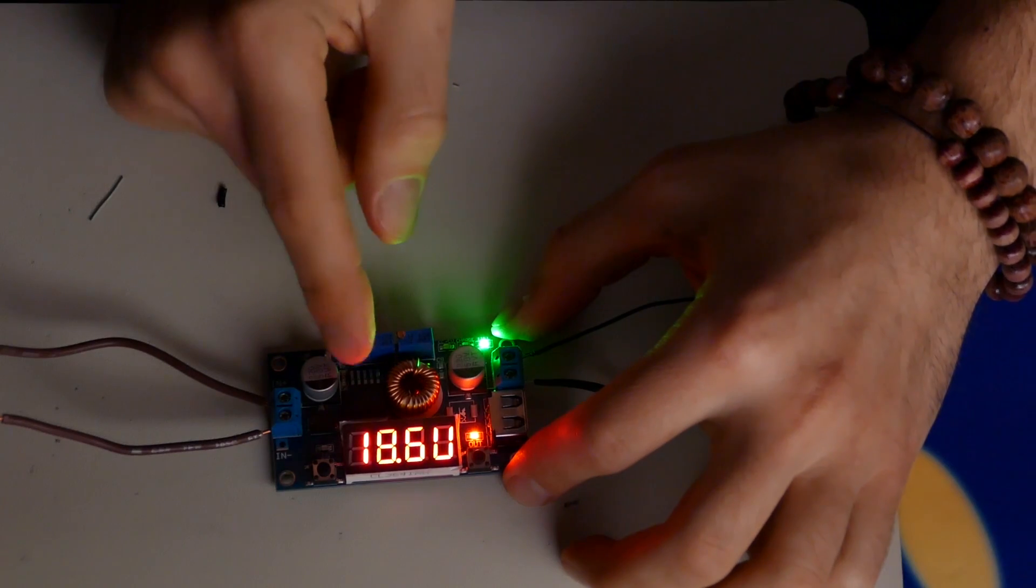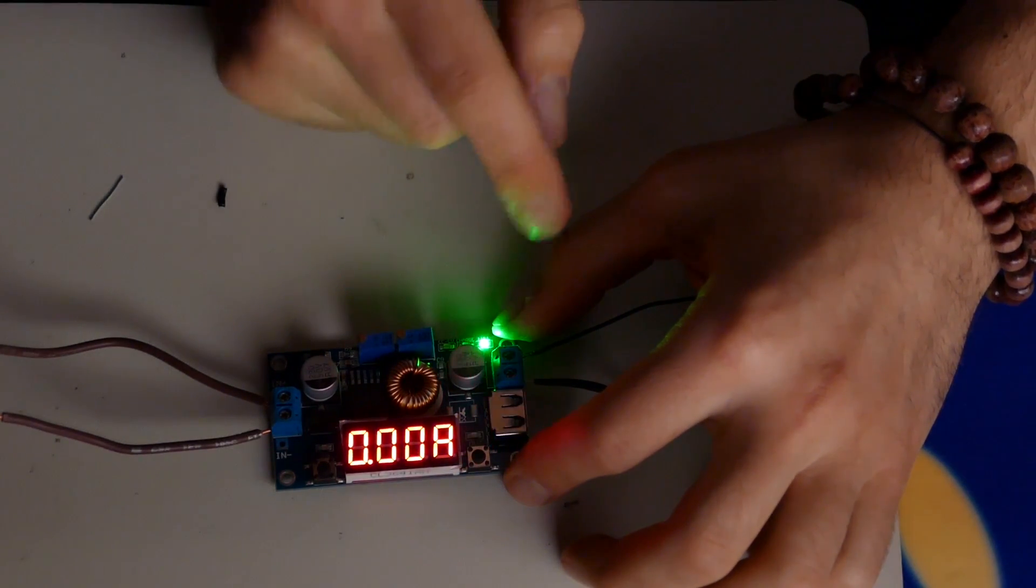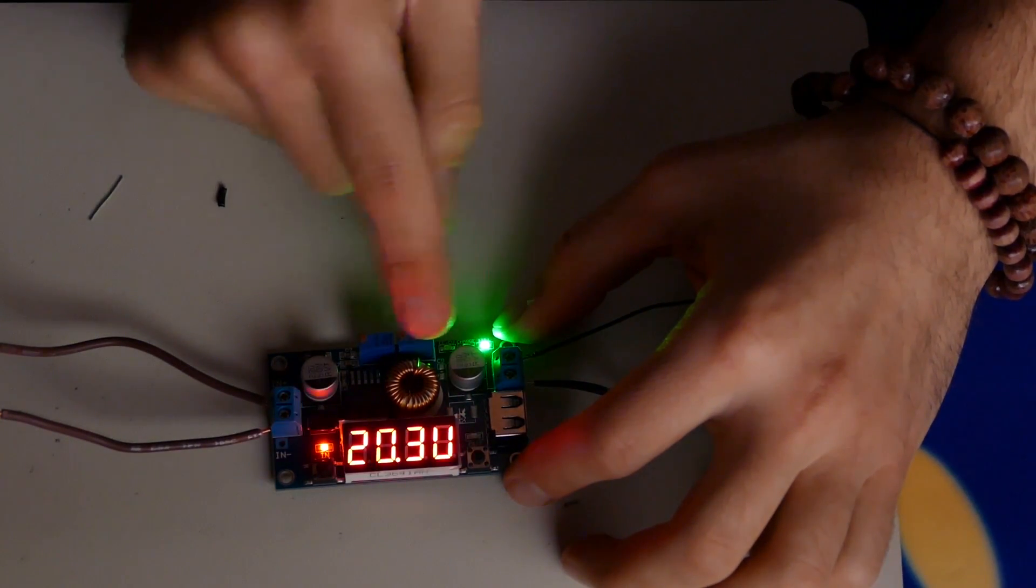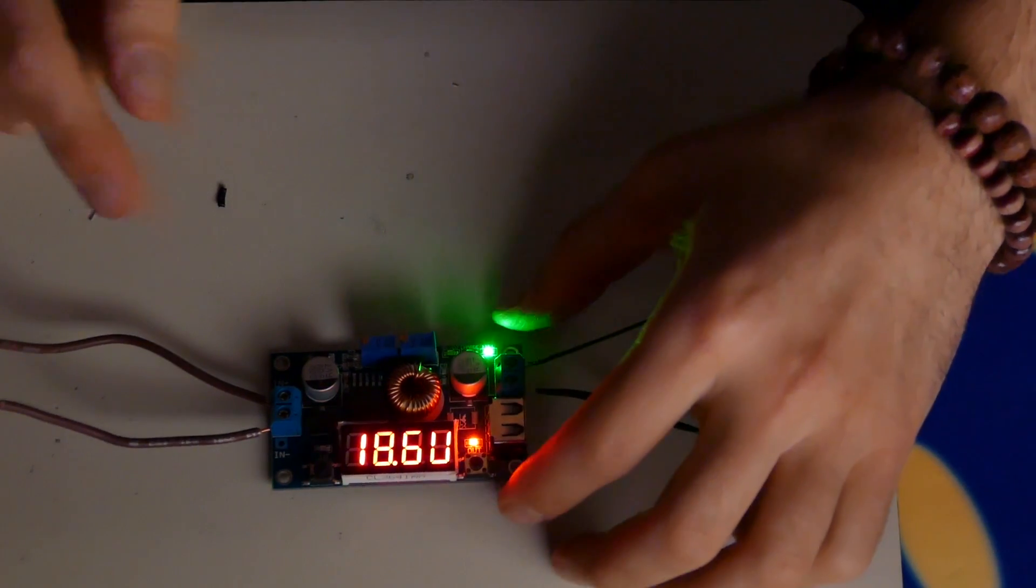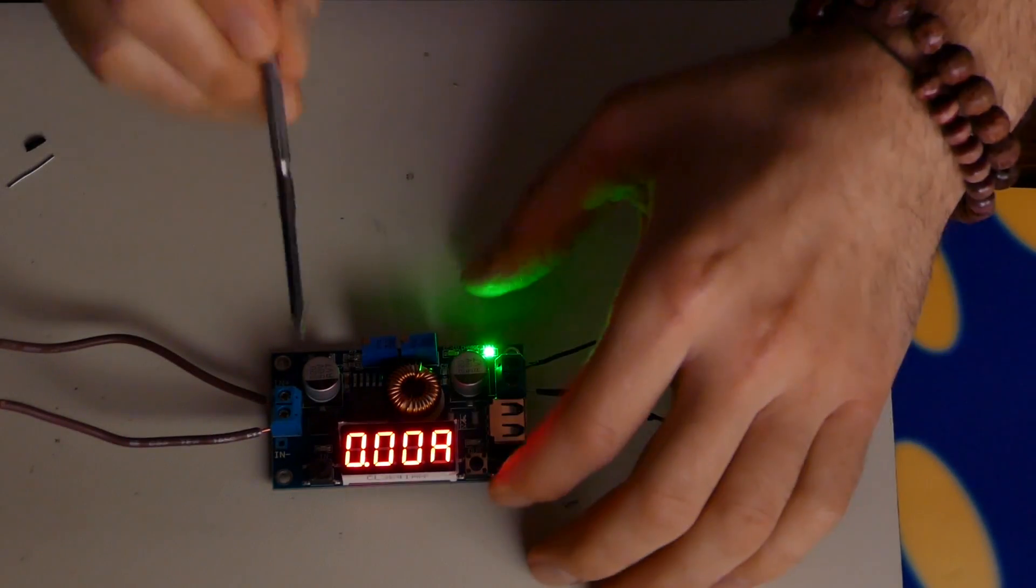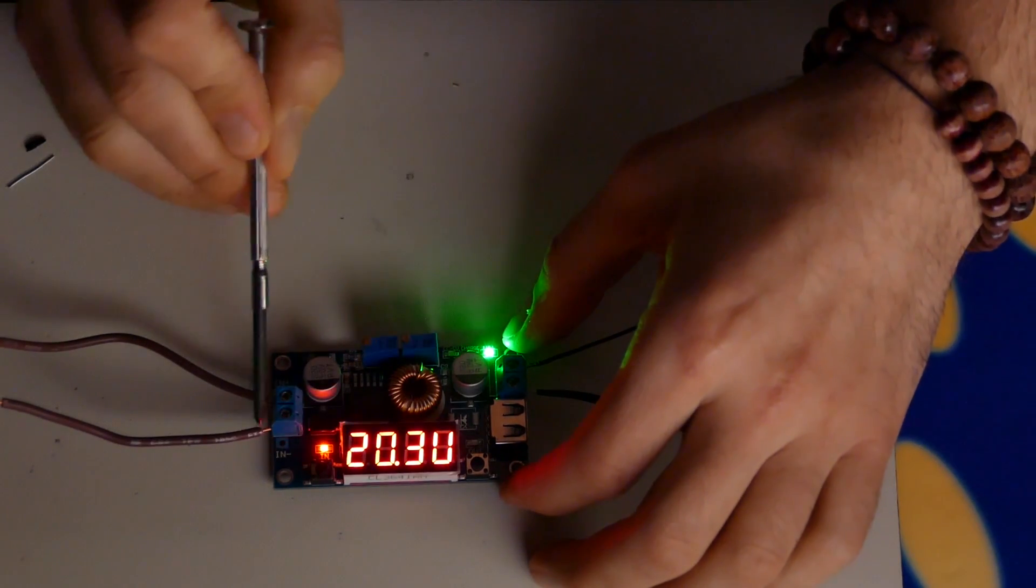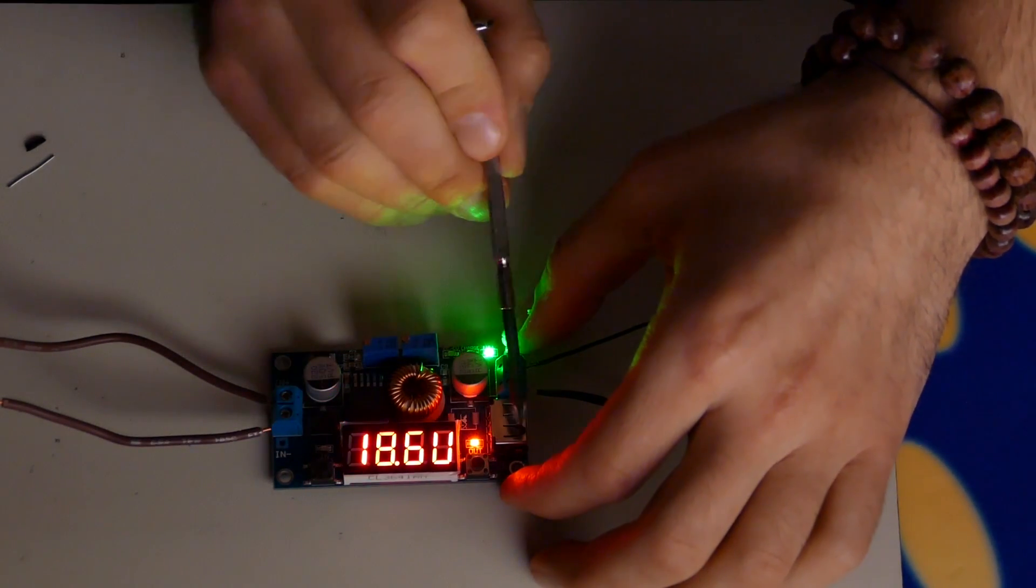Input side is saying we have 20.4 volts and on the output side we have 18. So that's probably because the potentiometer is set somewhere in that zone. You see the light corresponds with the input side or output side, input side 20 volts, output side 18.